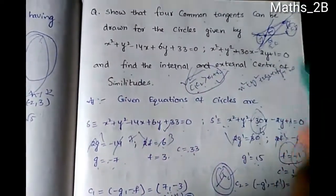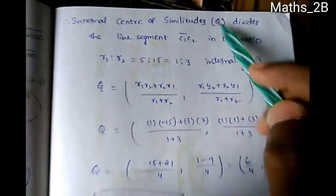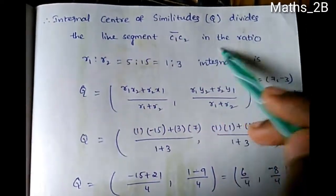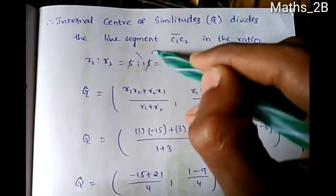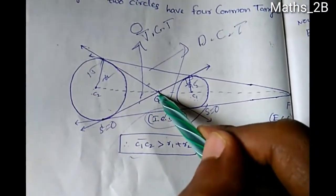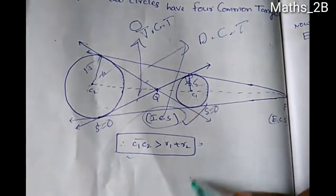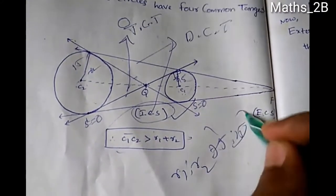The internal center of similitude Q divides the line segment C1C2 in the ratio R1 : R2 = 5 : 15 = 1 : 3 internally.